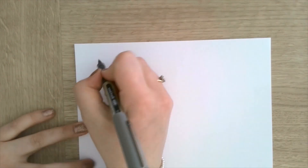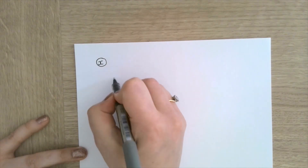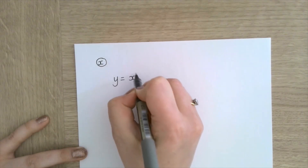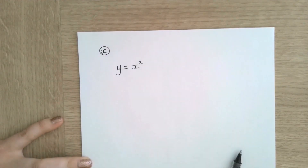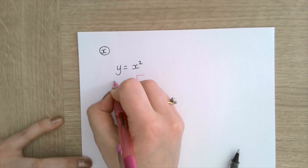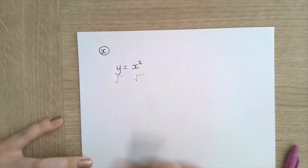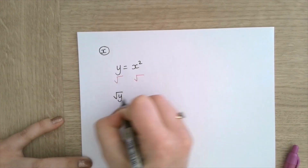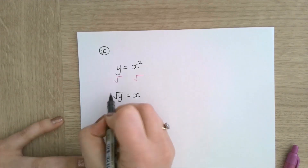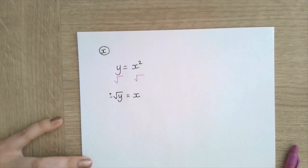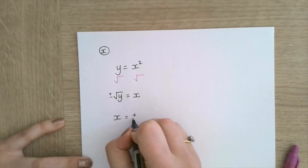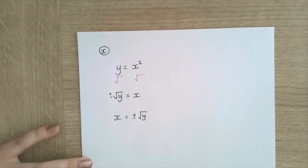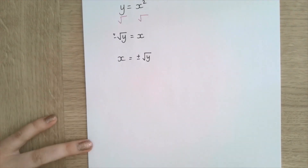Next, I want to make x the subject of y equals x squared. The inverse of squaring is square rooting, so I take the square root of both sides. Since we square root, we include plus or minus, giving x equals plus or minus the square root of y. A nice simple one.